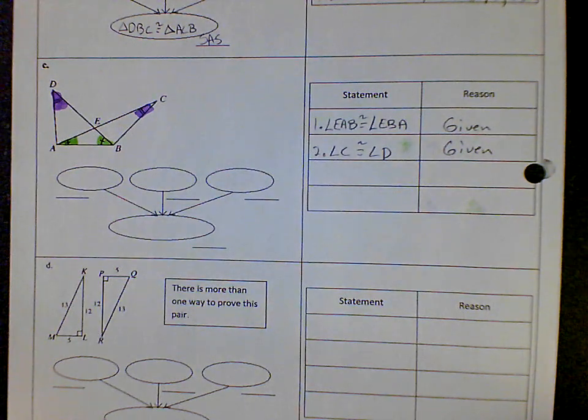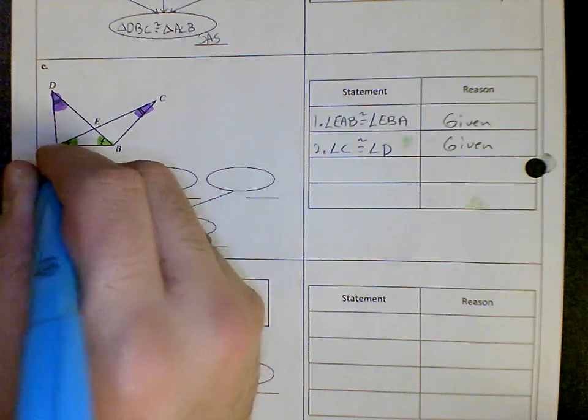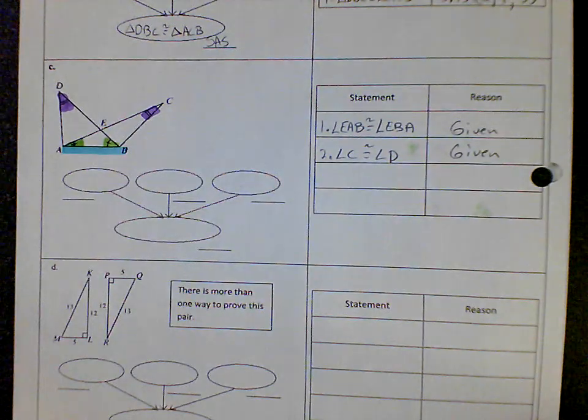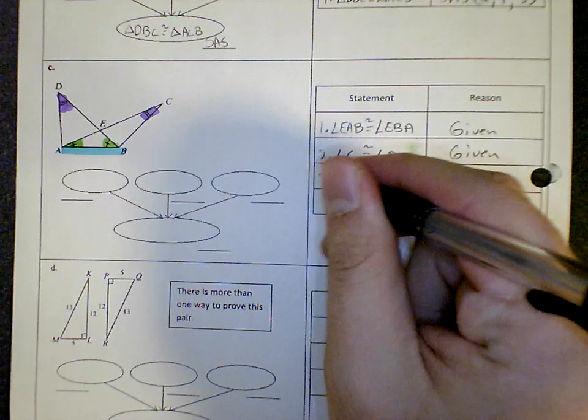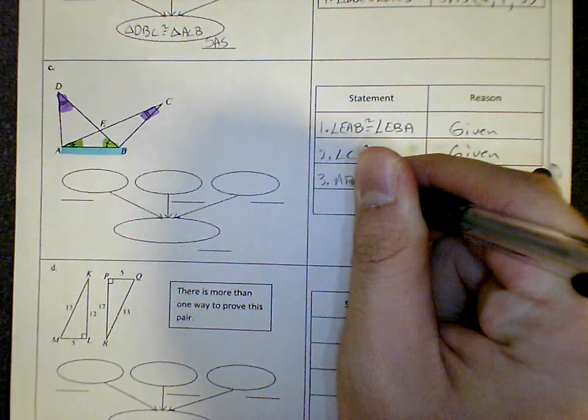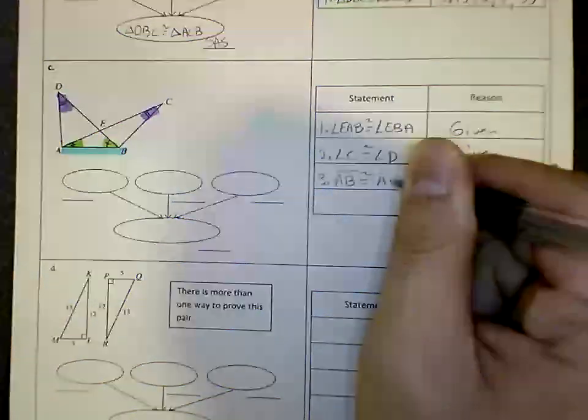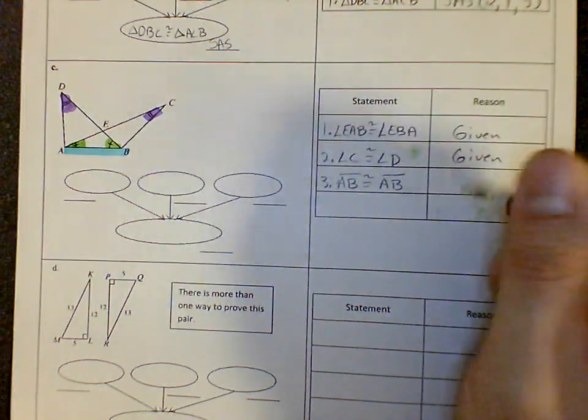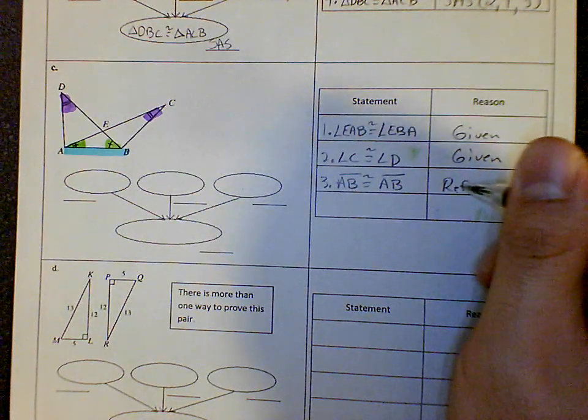There's one other piece of information I know. I know AB is congruent to AB. And if it's congruent to itself, it's reflexive.